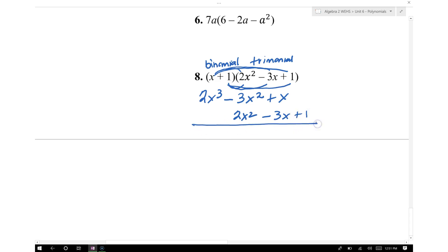And then I'm going to combine like terms. Since I don't have an x cubed here, I'm just going to drop this and I'm going to have 2x cubed. We know that negative 3x squared plus 2x squared gives us negative x squared.